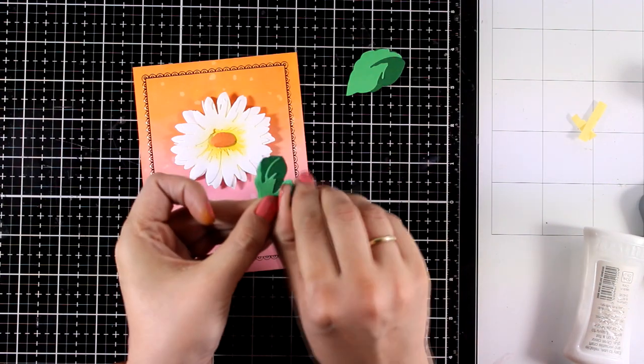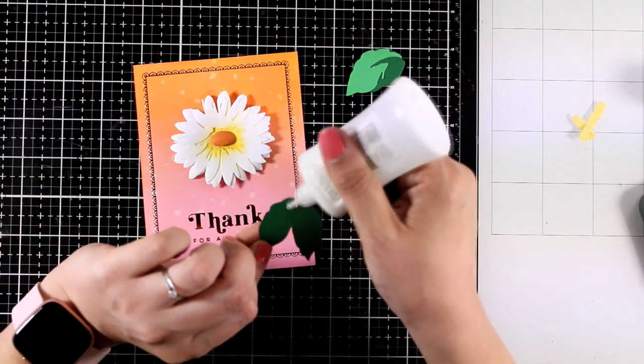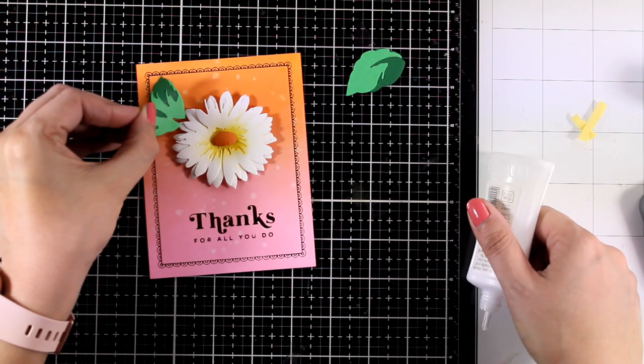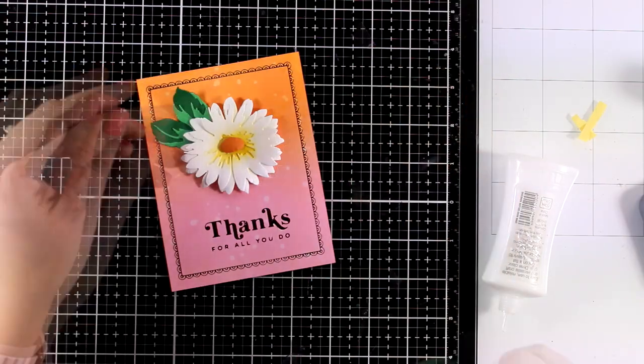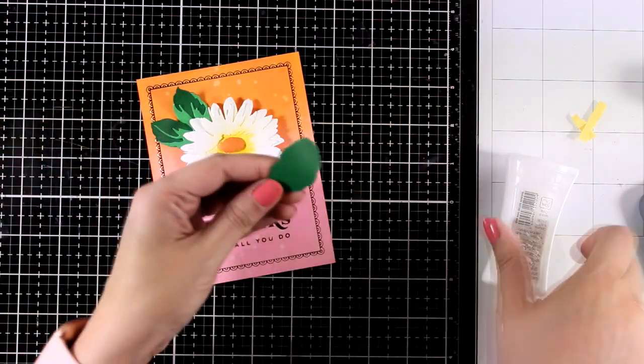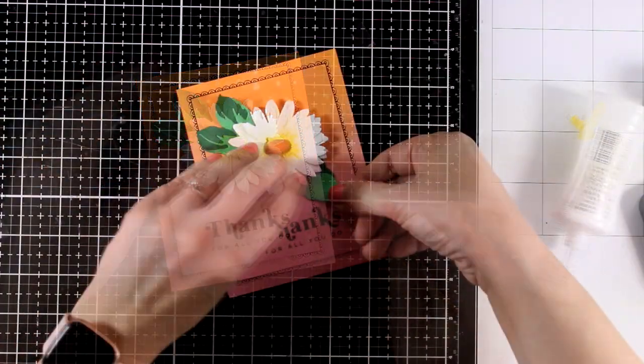I like to have some dimension on my cards and I cannot stay away from that. Now I am going to stick the leaves, just tuck them underneath the flower, and all I have to do then is to stick this panel on top of a pre-folded card that is 4 1⁄4 by 5 1⁄2.